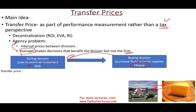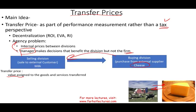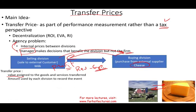What is a transfer price? Simply put, the transfer price is the price that the milk division charges to the cheese division — they have to assign a value to the goods and services. If they give it to them at cost, then the milk division would no longer be considered a profit center; it would be a cost center and evaluated differently. We are assuming the milk division is a profit center, meaning they produce revenues and incur expenses, so when they sell to the cheese division, it's recorded as cost of goods sold.